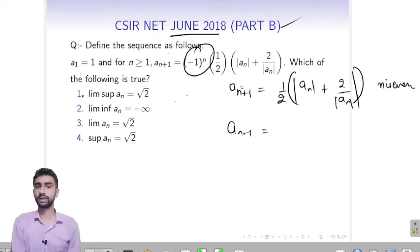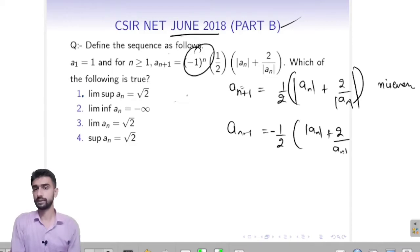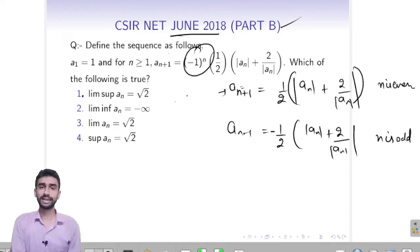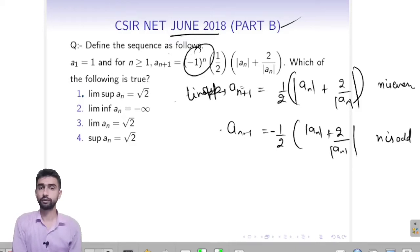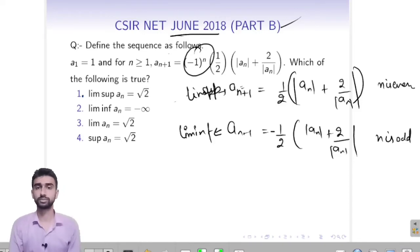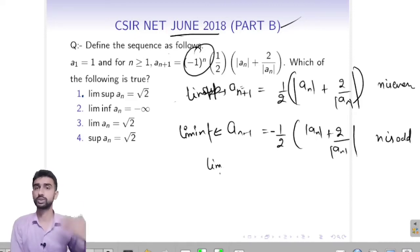And An+1 will behave like 1 upon An minus 1 upon An when An+2 upon mod An when An is odd. From this, I will get the lim sup because all these will be positive terms. And from this, I will get the lim inf because all of these will be the negative terms. If you just try to find the lim inf, I will do the iterative process which we have discussed in the conceptual video.